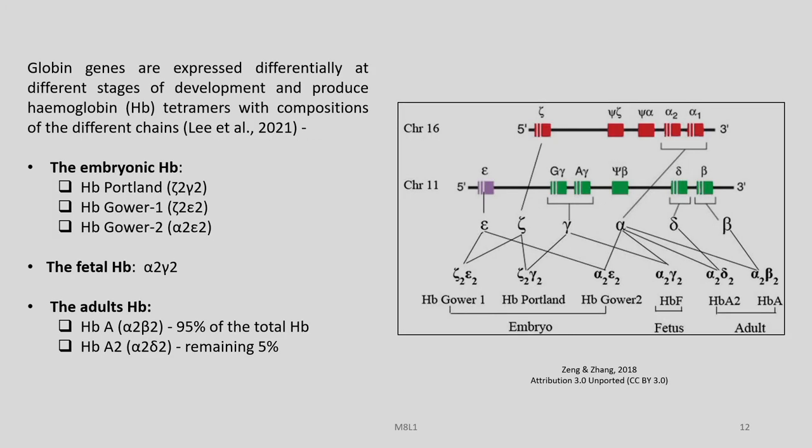Globin genes are expressed differentially at different stages of development and produce hemoglobin tetramers with compositions of different chains. The embryonic hemoglobins include HB Portland, HB Gower 1 and HB Gower 2, with compositions like alpha2-epsilon2, zeta2-epsilon2, or zeta2-gamma2. The fetal HB has alpha2-gamma2. The adult HB has HbA and HbA2 with alpha2-beta2 and alpha2-delta2 respectively, with the majority — 95% — coming under HbA and the remaining 5% belonging to HbA2.